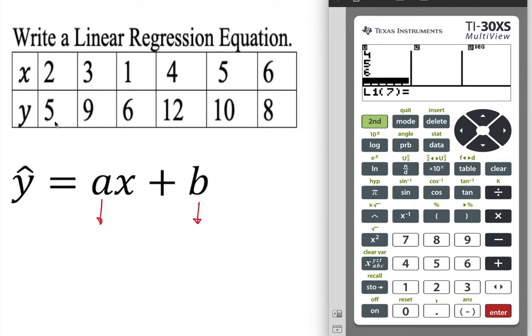Then I'm going to store the y values into the second column. How can I go to the second column? I just arrow to the right or left. Forward is going to get me to the right under L2.